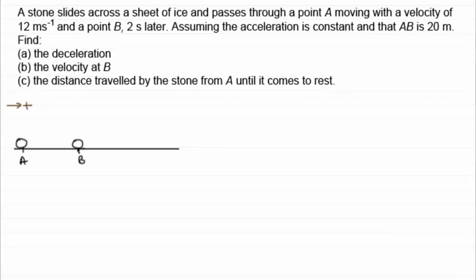So we've got the fact that as the stone passes through A, it's moving with a velocity of 12 meters per second. So I'll just mark that in. We know it travels a distance 20 meters from A to B. So we could just put that in as 20 meters from there to there. And we also know that it passes B two seconds later. So I think what I'll do, we'll put T equals 2 at this point here.